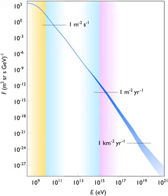Composition. Of primary cosmic rays, which originate outside of Earth's atmosphere, about 99% are the nuclei of well-known atoms, stripped of their electron shells, and about 1% are solitary electrons, similar to beta particles.